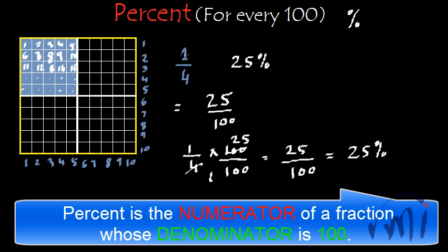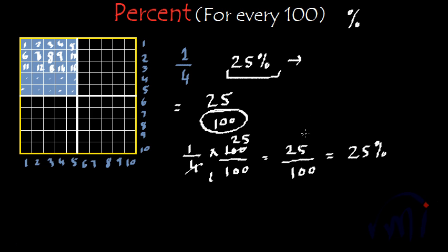When you talk in terms of fractions you have to mention both the numerator and denominator. But when you talk in terms of percentage, you need not mention the denominator — we are just talking about the numerator. This 25 percent is nothing but the numerator of the equivalent fraction of 1 by 4 that has denominator 100. So percent is always a fraction whose denominator is 100, and we just mention the numerator. And why do we need percent? Because it standardizes fractions — we make all denominators 100, which makes comparisons easy.